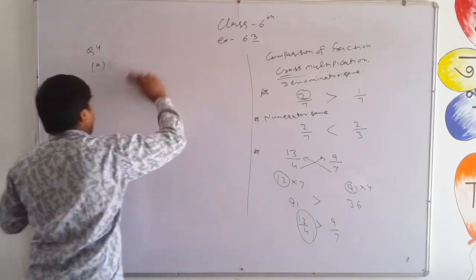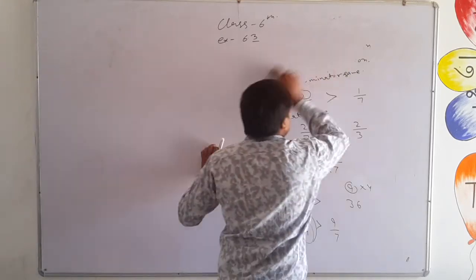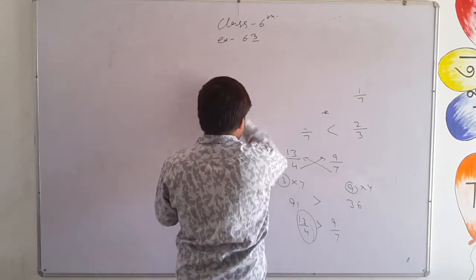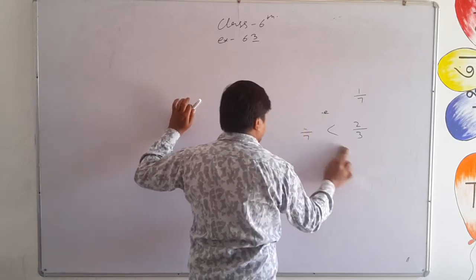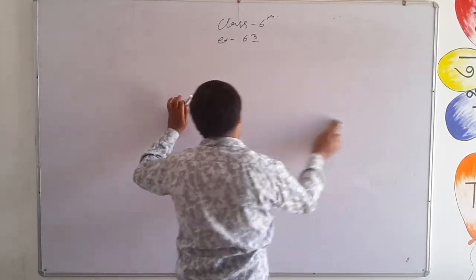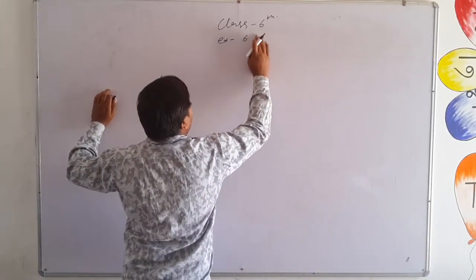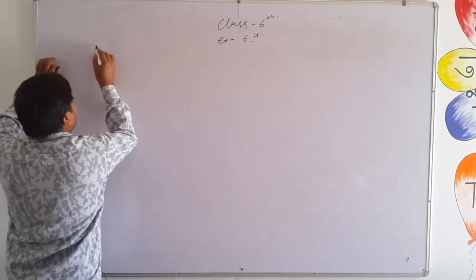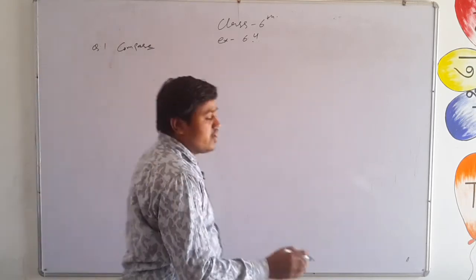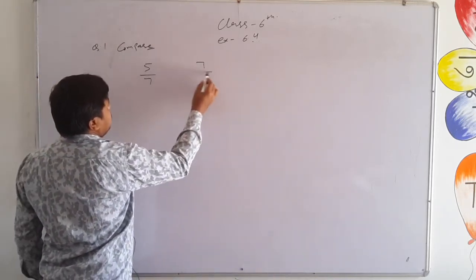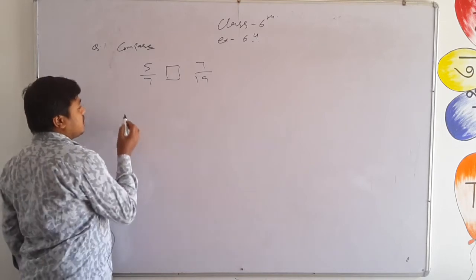Also remember: a positive number is always greater than a negative number — as you can see on the number line, moving to the right always increases the value. Now exercise 6.4 question number 1: compare 5 upon 7 and 7 upon 19. The numerators and denominators are both different, so we use cross multiplication.